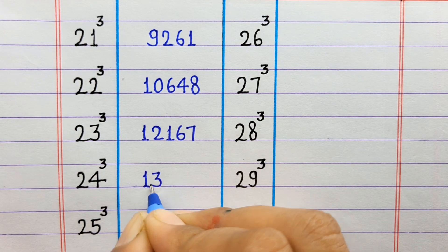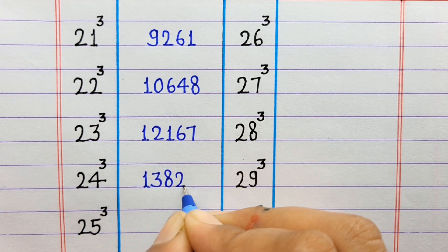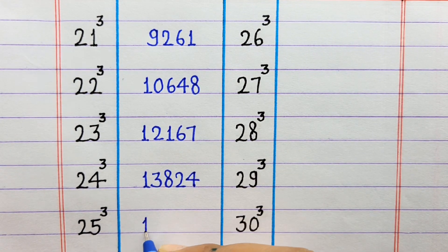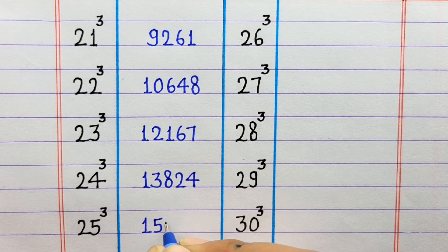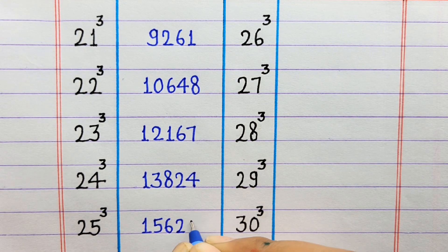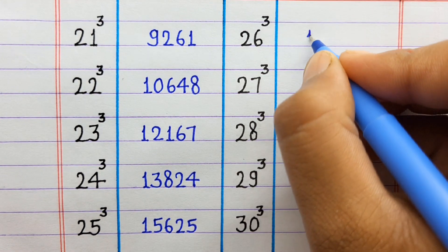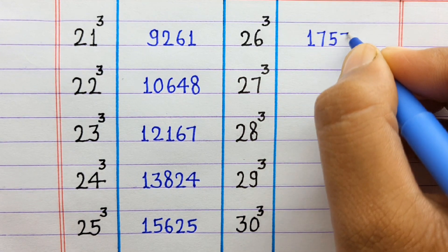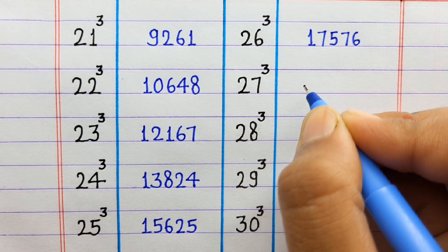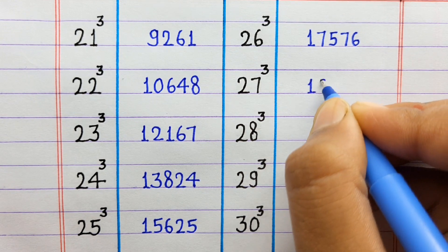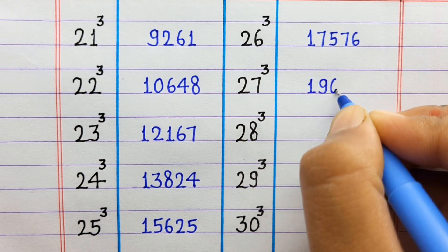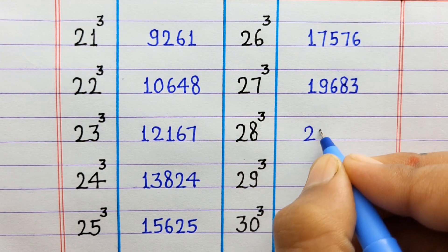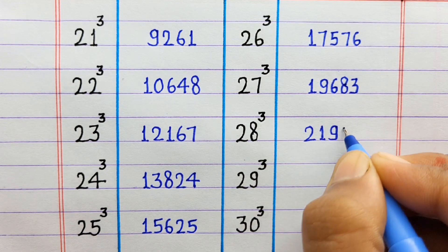24 ka cube 13,824. 25 ka cube 15,625. 26 ka cube 17,576. 27 ka cube 19,683. 28 ka cube 21,952.